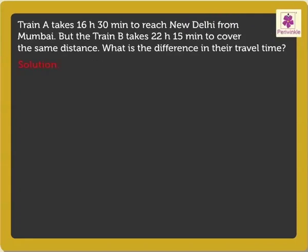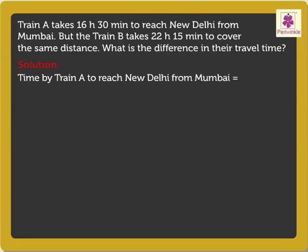First, let's write the statements. Time taken by train A to reach New Delhi from Mumbai is equal to 16 hours 30 minutes.